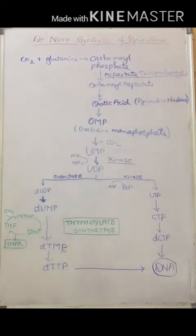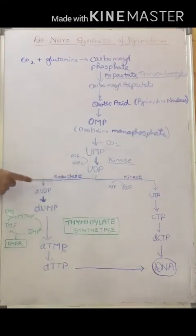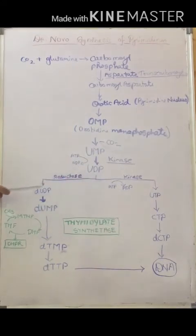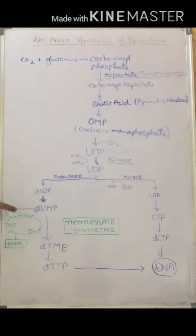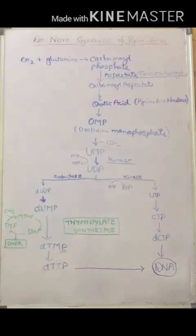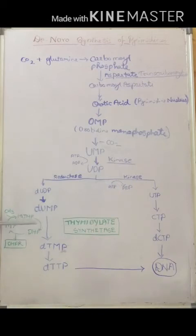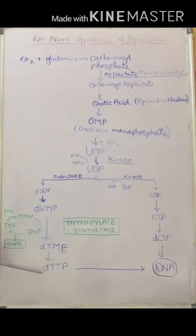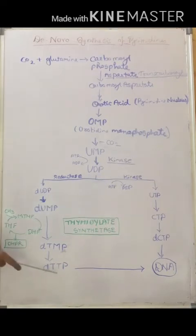The key concern for pyrimidine antagonists is the enzyme thymidylate synthetase. UDP is converted by a reductase enzyme to deoxy-UDP (dUDP), which is further converted to dUMP (deoxy uridine monophosphate). This dUMP is the substrate for thymidylate synthetase, which uses the cofactor methylene tetrahydrofolate to convert it into deoxy thymidine monophosphate (dTMP), which is further converted to DTTP and incorporated into DNA.